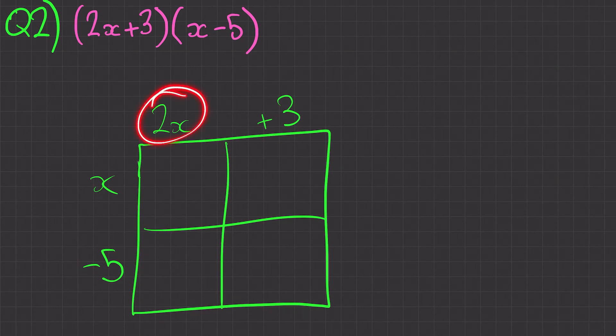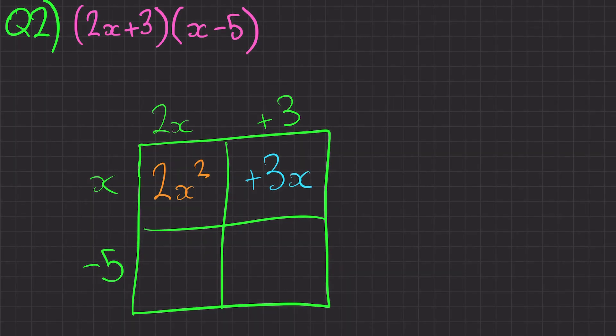Firstly I'm going to do 2x multiplied by x which will equal 2x squared. Next I'm going to do 3 multiplied by x which will equal plus 3x. Then 2x multiplied by minus 5 which will equal minus 10x. And finally 3 multiplied by minus 5 which is minus 15.